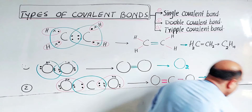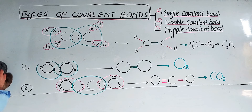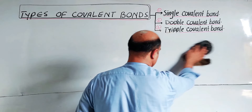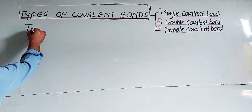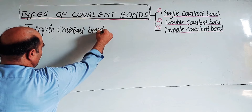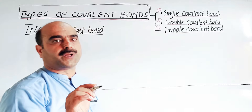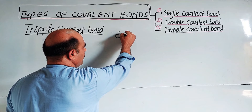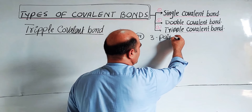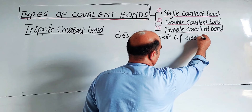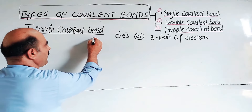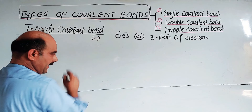Last one: triple covalent bond. Note this example down. The definition is similar to before, with only a change in the number of electrons and pairs. The type of covalent bond which is formed by the equal sharing of six electrons — three pairs of electrons — between two similar or two different atoms is called a triple covalent bond. A triple covalent bond is represented by three short straight lines.